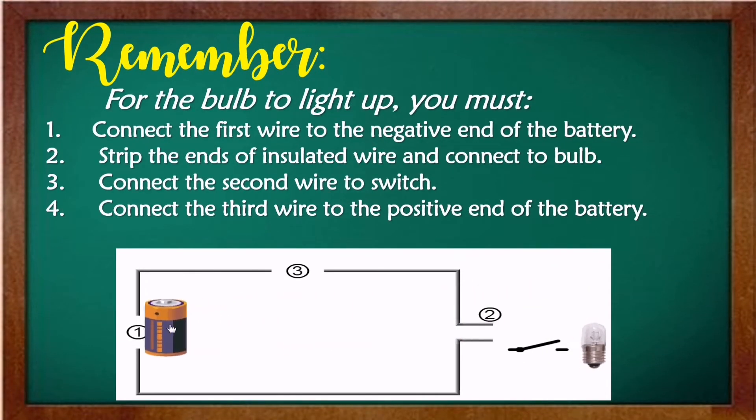For the bulb to light up, you must: Number one, connect the first wire to the negative end of the battery. Strip the ends of insulated wire and connect to the bulb. Number three, connect the second wire to switch. Number four, connect the third wire to the positive end of the battery.